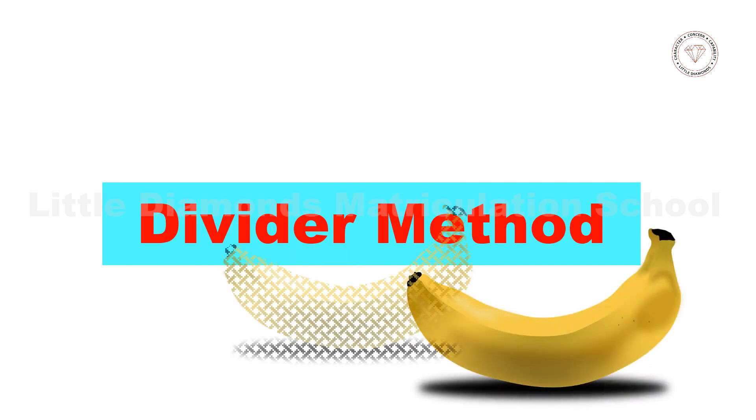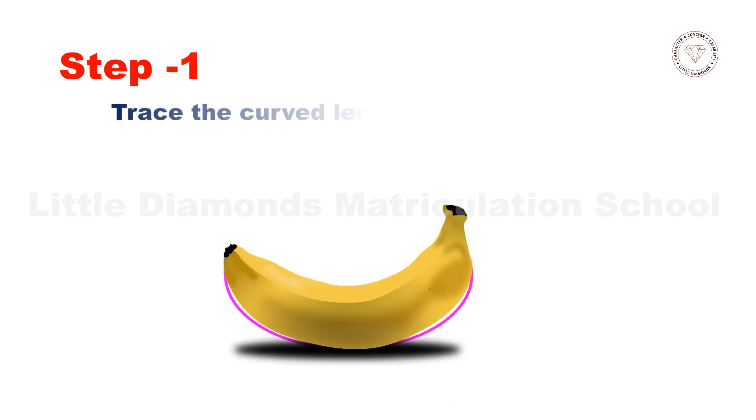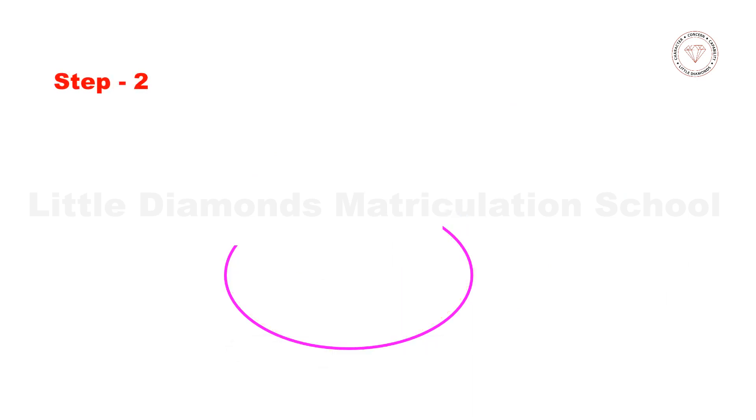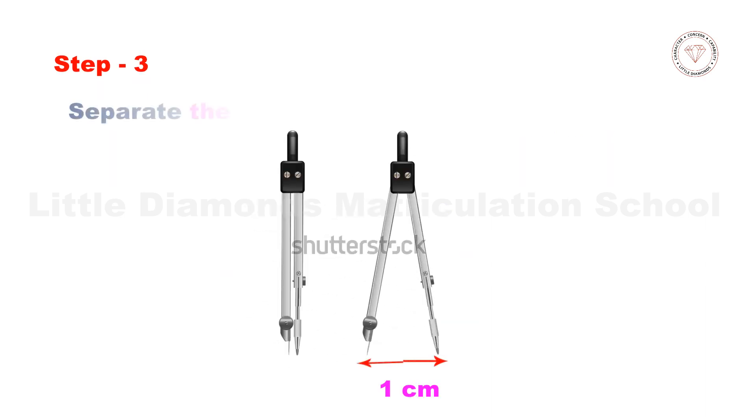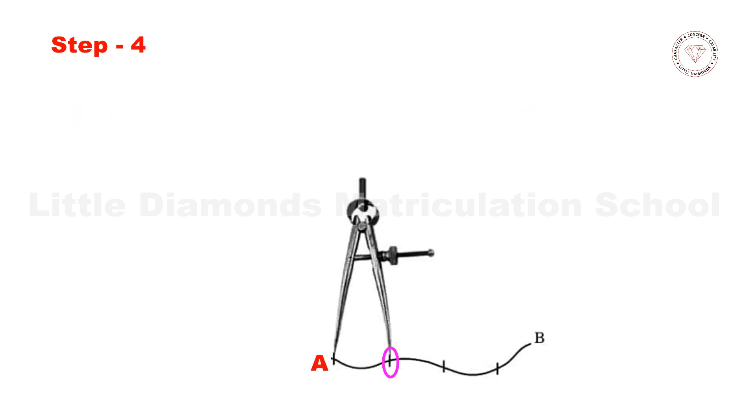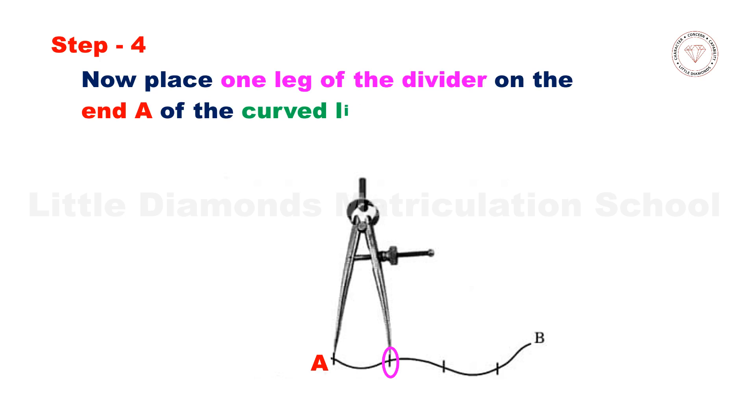As before, Step 1 - trace the curved length of the banana on a sheet of paper. Step 2 - mark one end as A and the other end as B. Step 3 - separate legs of the divider by 1 centimeter using a ruler. Step 4 - now place one leg of the divider on the end A of the curved line and the other leg along the curved line.